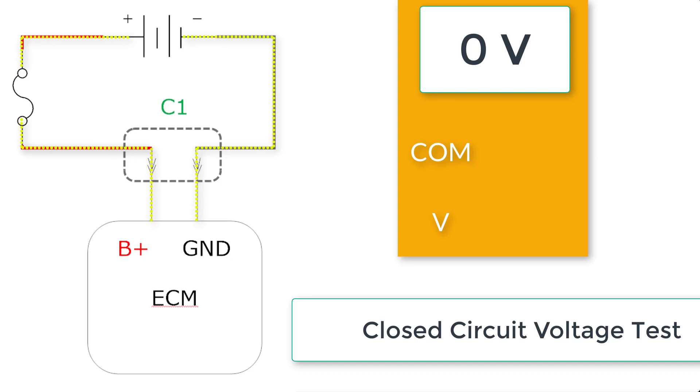In order to perform a closed circuit voltage test, we will need to back probe into connector one. You can use a T-pin to back probe or there are specific back probing tools that you can find for your multimeter. We'll slide the back probe tool in the back of the connector and make sure that it makes contact with the metal terminal part of the wire. We need to put one on pin one, the B positive, and we need to put one on the ground, pin two. Next we'll connect the red meter lead to pin one at B positive, and the black meter lead at pin two which is the ground pin.